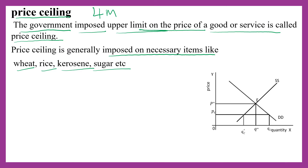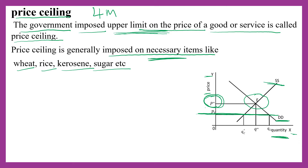In the diagram, on the x-axis quantity is measured and on the y-axis price is measured. You can see point E, which we call the equilibrium position, where demand for goods is exactly equal to supply of goods — this is the market price. The government is going to impose an upper limit because the equilibrium price P-star is so high that common people are unable to buy necessary items which are very essential for life.